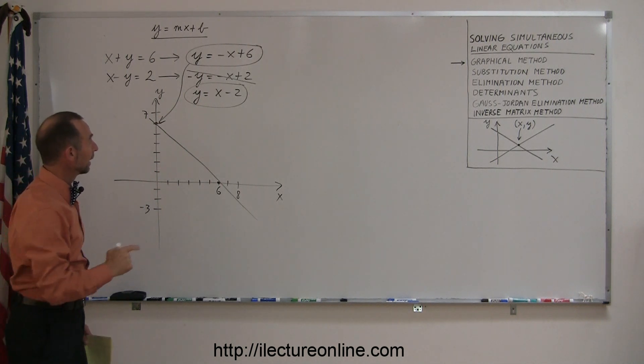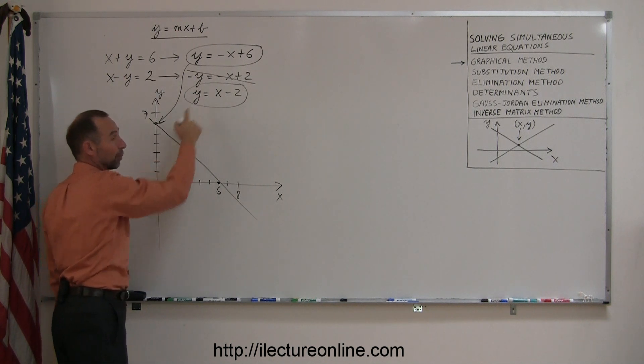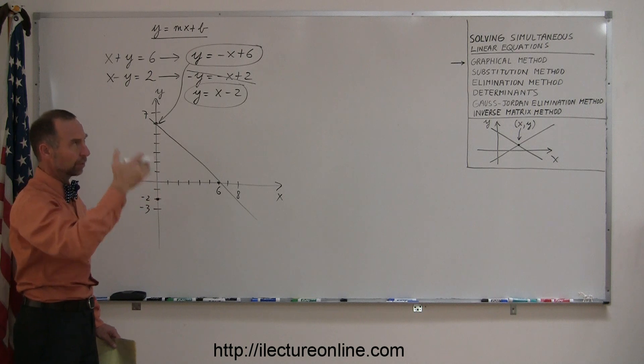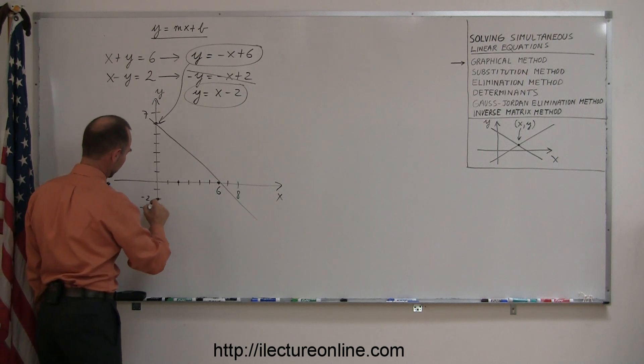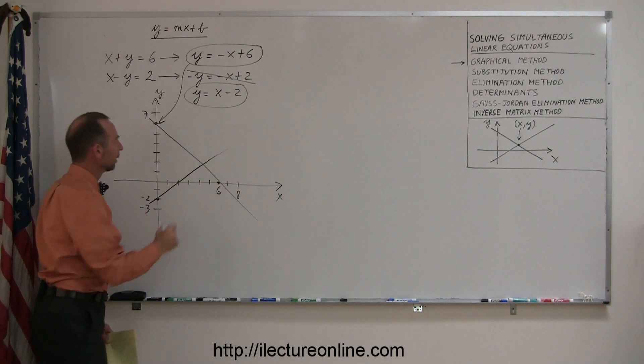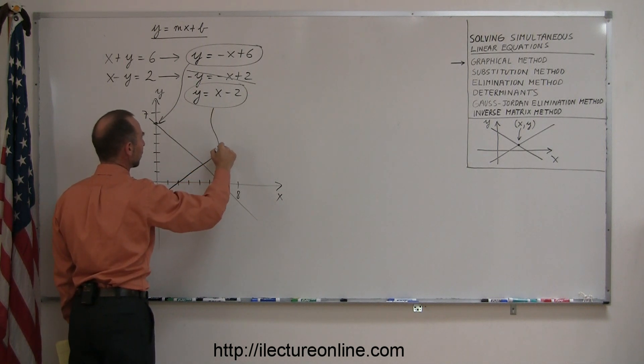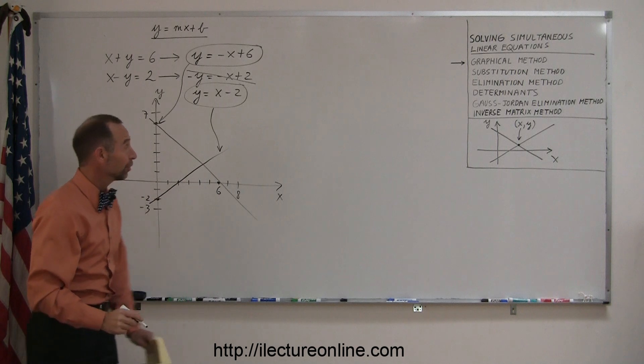Graphing the next equation, my intercept is a negative 2, which is right here, and my slope is a positive 1, which means I rise 1, run 1, rise 1, run 1, or rise 2, run 2, so right there. If I connect those two points, there we go, so this is the linear representation or the line that represents the equation y equals x minus 2.